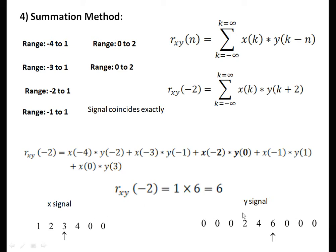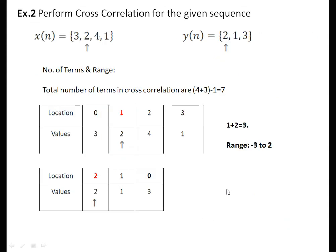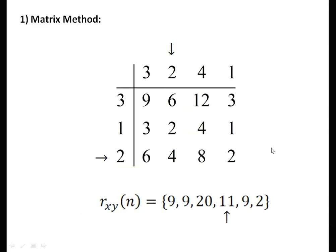Second example: perform cross-correlation for the given sequence. x(n) = {3, 2, 4, 1} and y(n) = {2, 1, 3}. Number of terms: 4 plus 3 minus 1 = 6. For R_xy, the first signal x is taken in forward direction with counter 0, 1, 2, 3 (arrow index at 1). For y = {2, 1, 3}, counter is reversed 0, 1, 2 (arrow index at 2). Index sum: 2 plus 1 = 3, so signal starts from minus 3 to next 6 locations, giving 2. Matrix method: x = {3, 2, 4, 1} forward, y reversed as {3, 1, 2}. Result: {9, 9, 22, 11, 9, 2}.